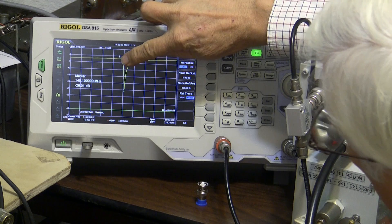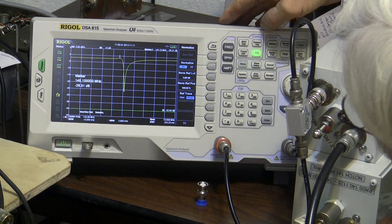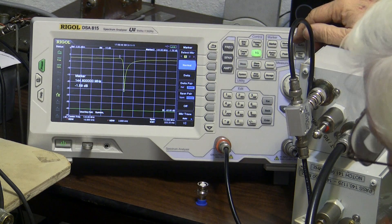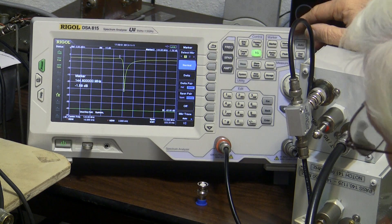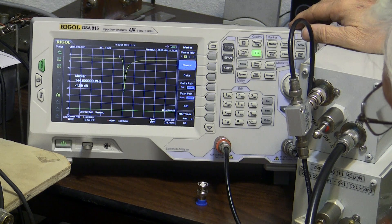The notch, of course, will be a very poor return loss, which is marker number two here, only minus 1.5, 1.6 dB. But it's where the notch is, so of course it's not matched.